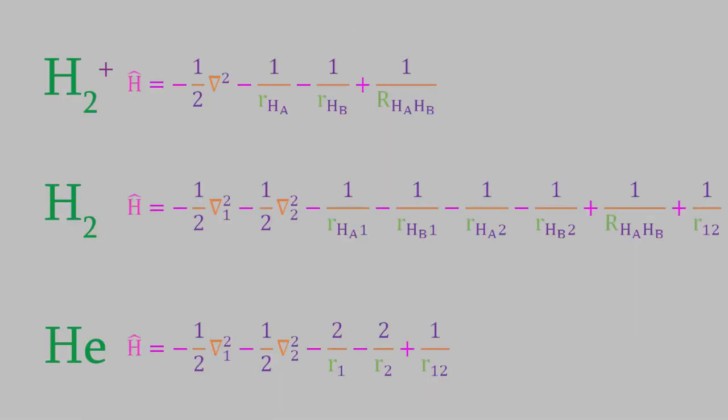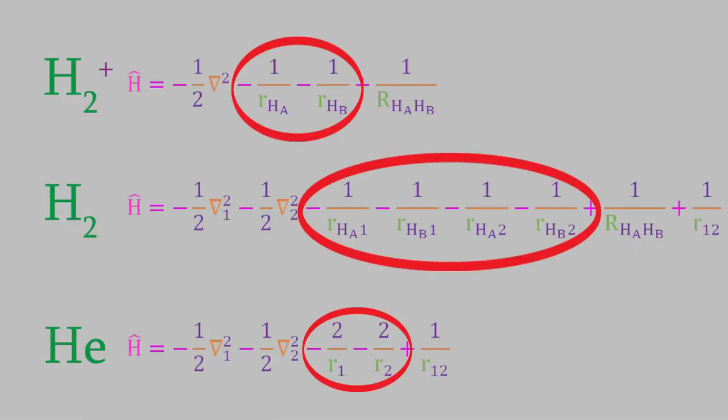One thing that's important to point out is that in the attraction and repulsion terms, the numerator contains the atomic number of the nucleus that's involved. So, unlike the case for the hydrogen molecule and the H2 plus ion, the numerators of the potential energy terms won't all be one.